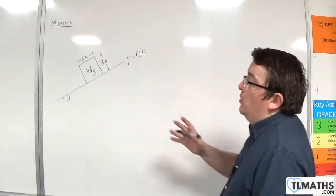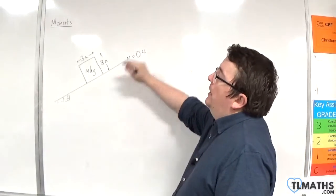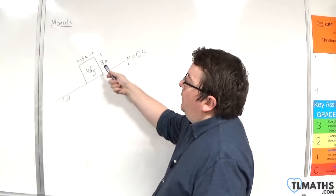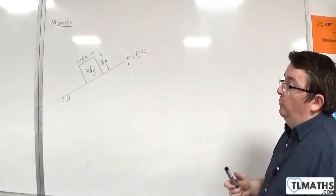In this video we have a block on an inclined plane. It has a mass of m kilos, a width of 3 metres and a height of 8 metres, and the coefficient of friction between the block and the plane is 0.4.